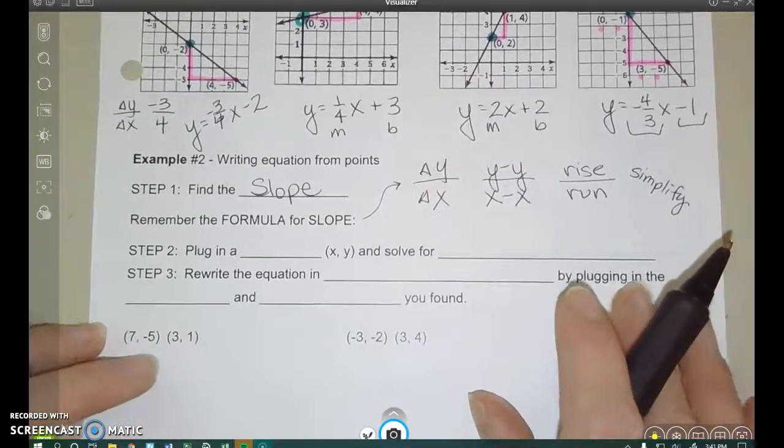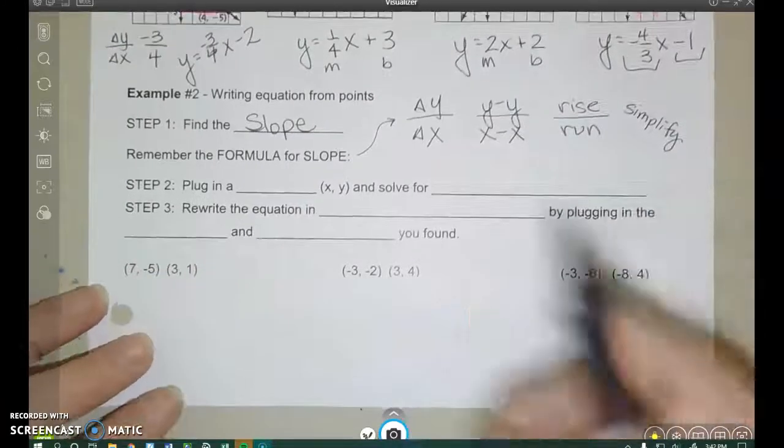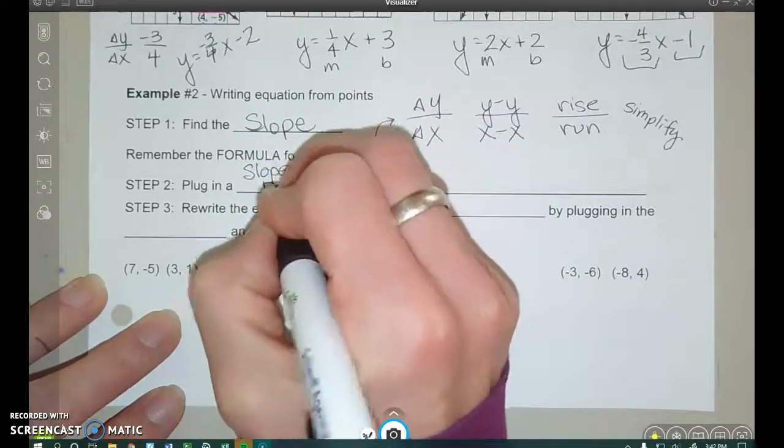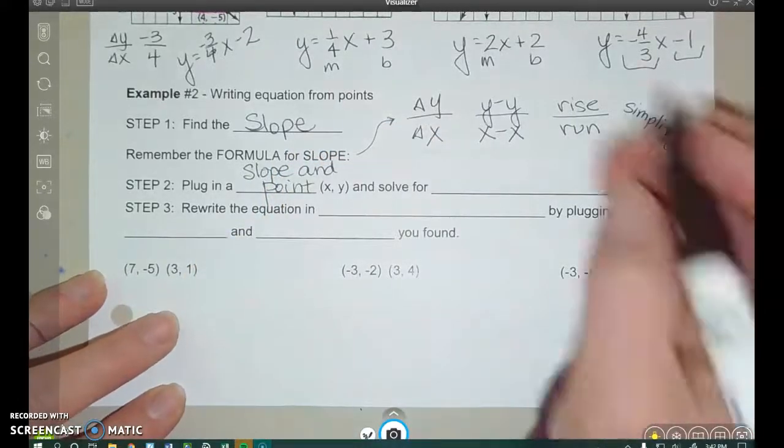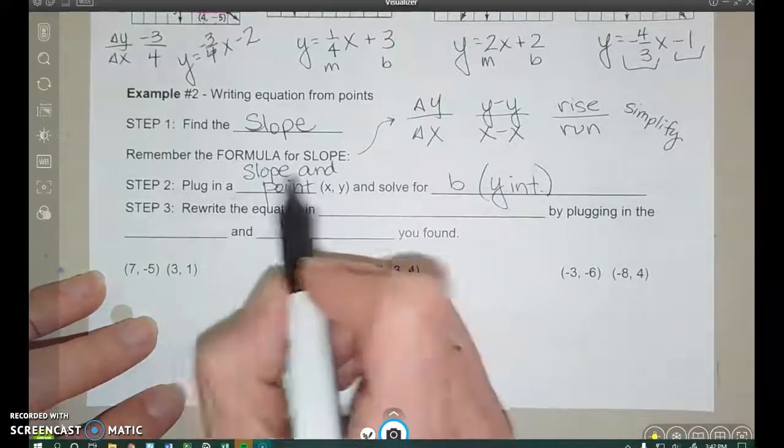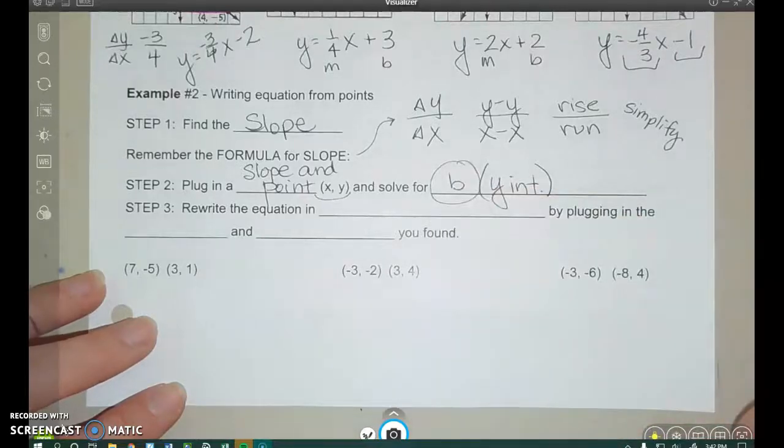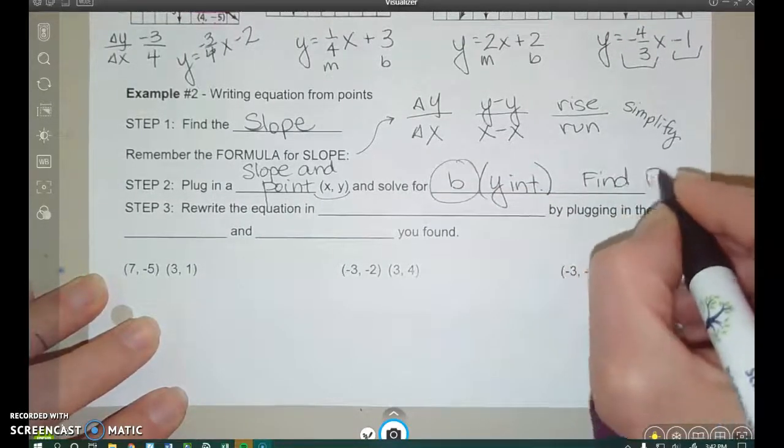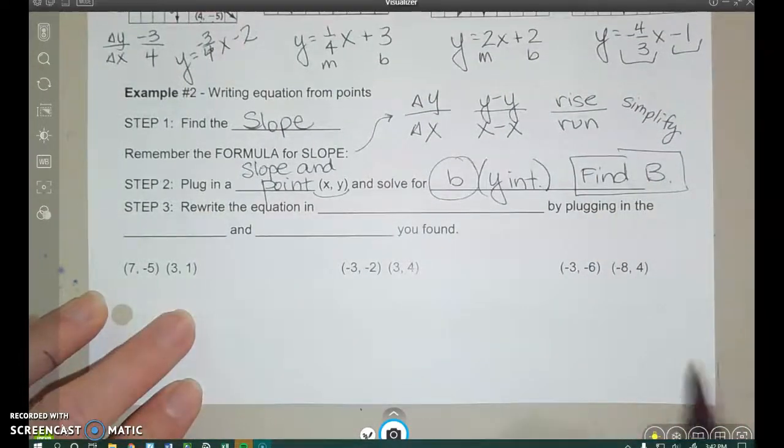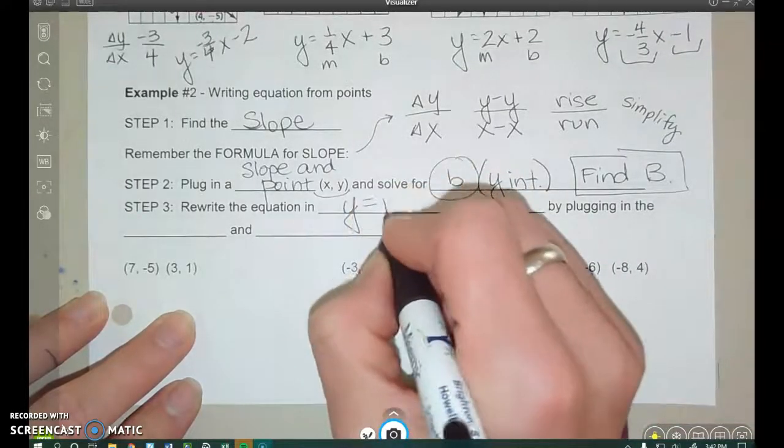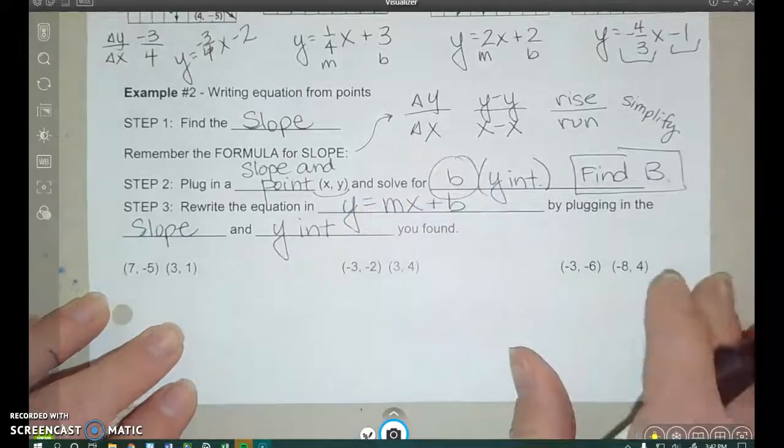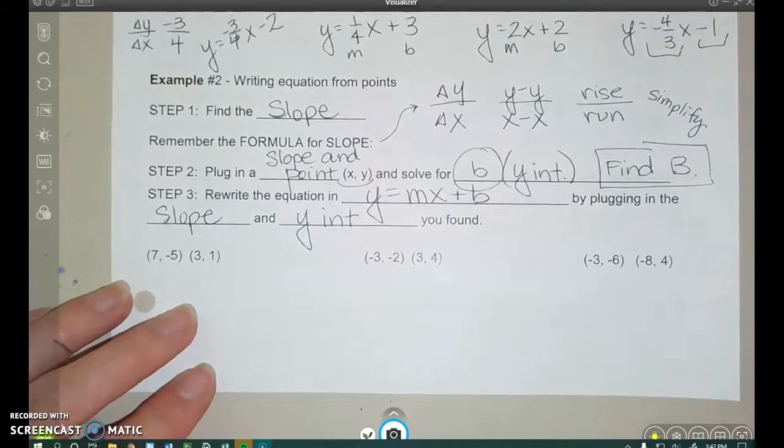All right, step two, let's finish writing in our steps. Step two is going to be plug the slope and a point into your equation and then solve for b, solve for the y-intercept. Plug in the slope that you just found and a point, the x, y that they give you, and we're going to have to solve for b to figure it out. Once you have slope from step one, b from step two, put it all together. Put it in y equals mx plus b form by plugging in the slope and the y-intercept that you found. So let's see what that actually looks like.